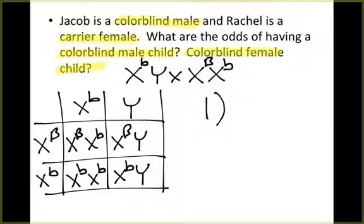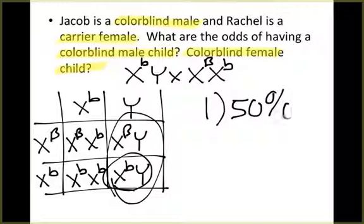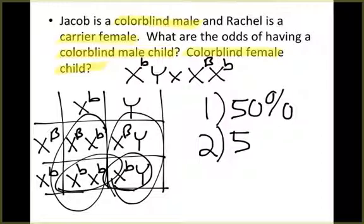What are the odds of having a colorblind male child? There are two males, and one of them is colorblind — 50 percent. For a colorblind female: there are two females and one is colorblind — 50 percent. The real key here is using your sex chromosomes to determine gender and being able to identify dominant and recessive alleles. It works a little differently with sex chromosomes, but the same core Punnett square skills apply.